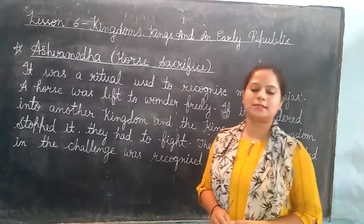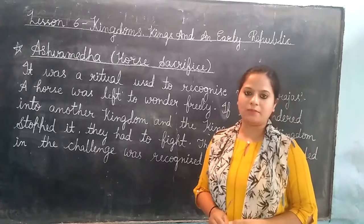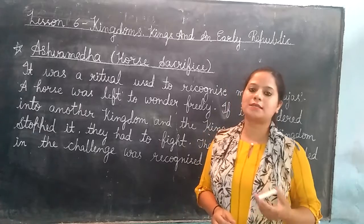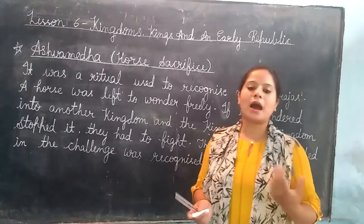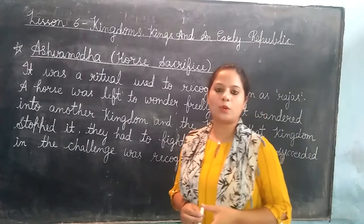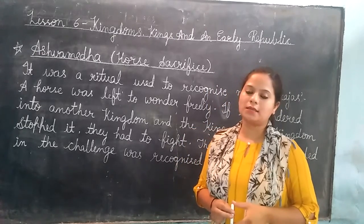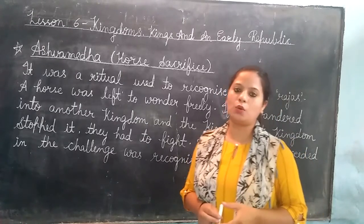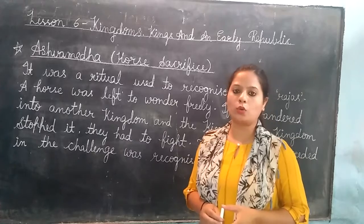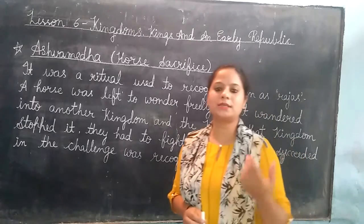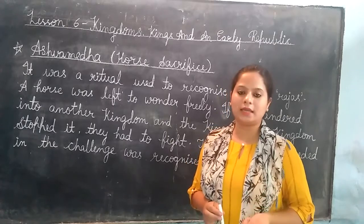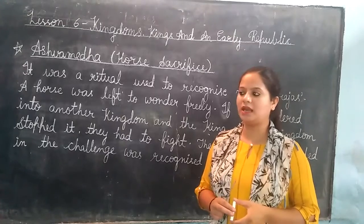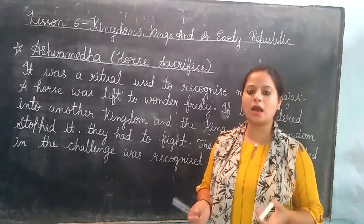Basically, in this chapter we will discuss about how men became rulers in the past. In the present time, in a democratic country, we choose our leader by voting. Every citizen who is 18 years old or more has the right to vote.